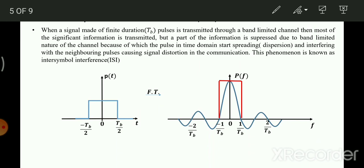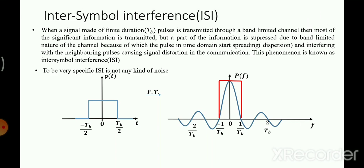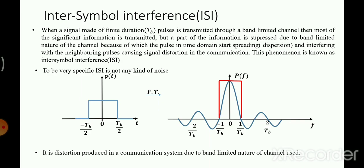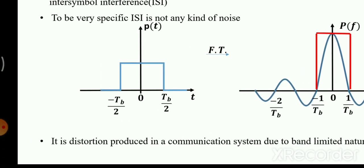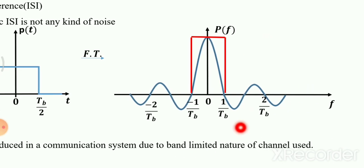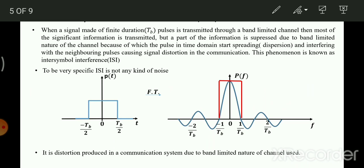ISI is not caused by noise. It is caused by the shape of the pulse. If the pulse had some other structure, maybe we would not encounter this problem. ISI is not any kind of noise — it is a dispersion. The first reason it happens is the band-limited nature of the channel.